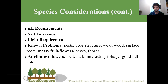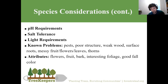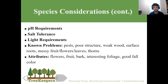Bradford pear is famous for poor structure — and callery pear cultivars are still being planted, which is problematic. Surface roots are a catch-22: many trees that tolerate urban conditions well are prone to surface roots, and that tolerance may partly come from those surface roots. You can't mulch over them — that hurts the tree — so you'll have to mow around them or use a chemical to control grass around them.